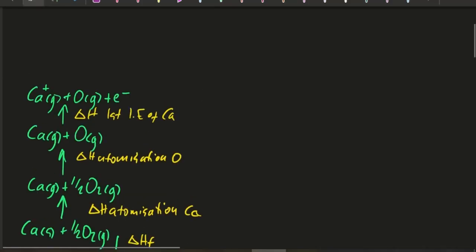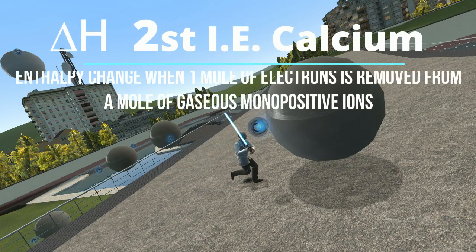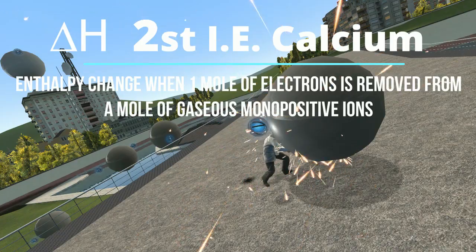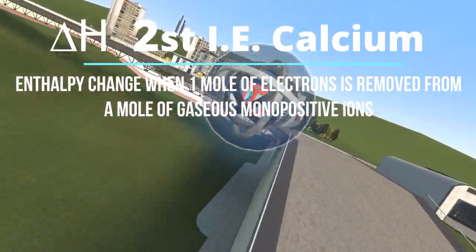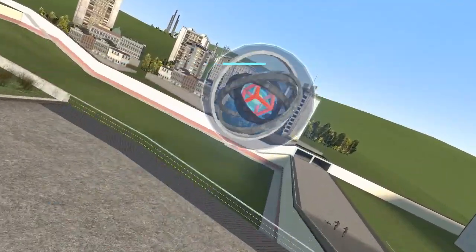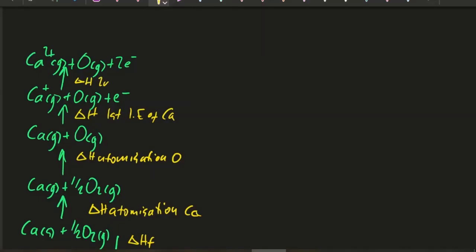Now I'm going to rip off the second electron from the calcium, leaving Ca²⁺. I've got my oxygen gas and two electrons — that's the second ionization energy. You could put those two steps together, I suppose.